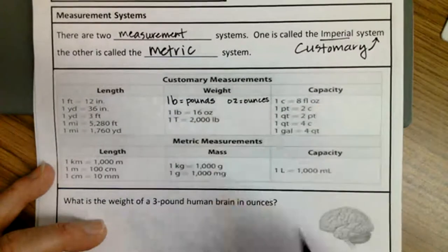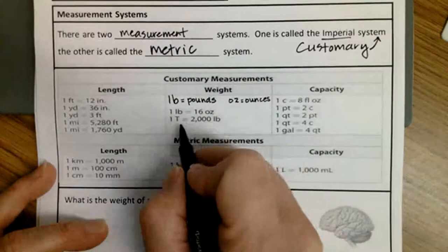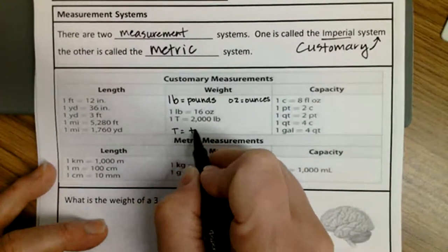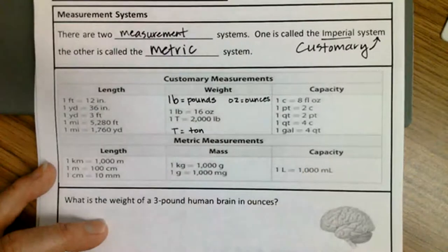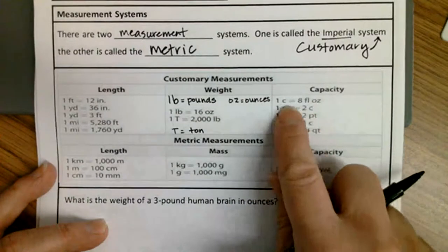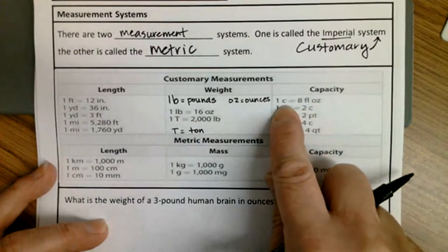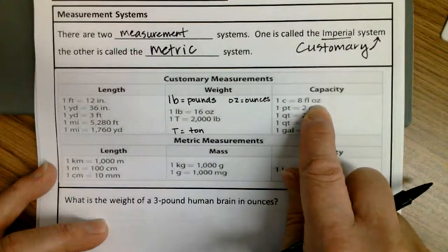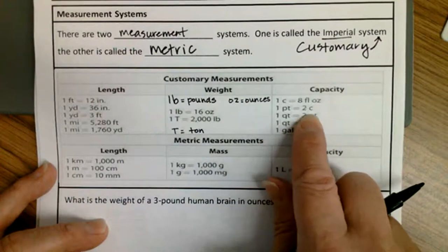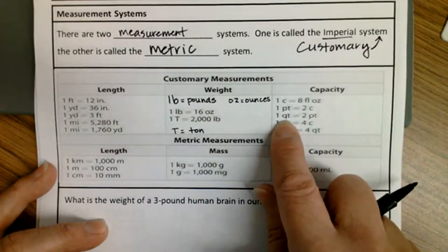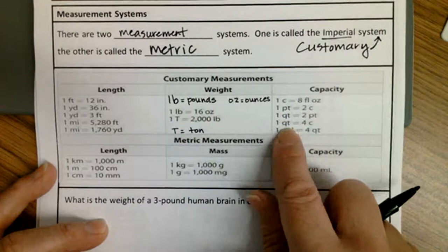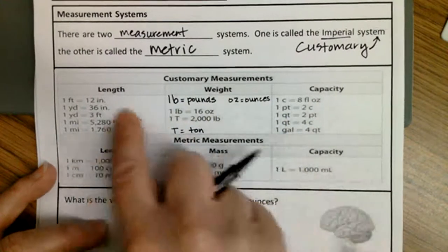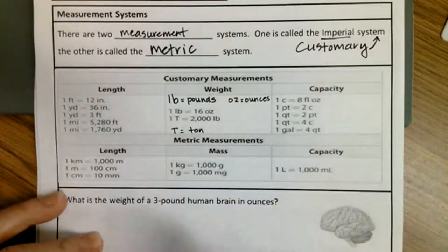OZ means ounces. The other thing about weight is T, and T means tons — T stands for a ton. And then you've got cups. When you measure something in the kitchen in cups, you might also measure in ounces. PT is pints, QT is quarts, and GAL is gallons. So this is the customary measurement system.